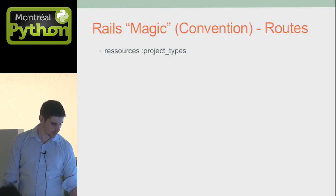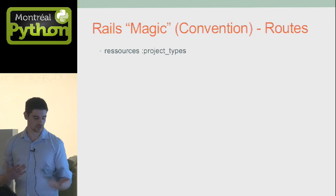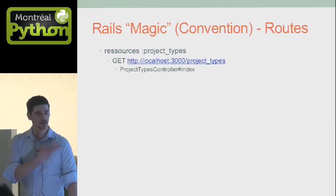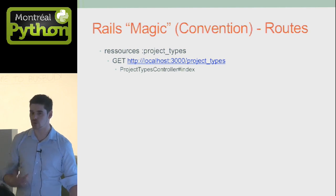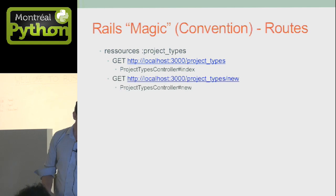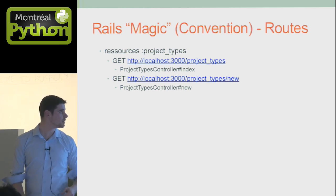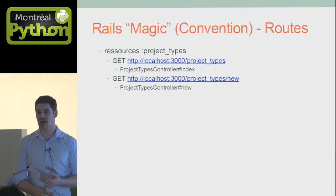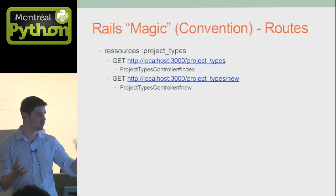Let's continue with routes. Resources colon project_types creates all the RESTful routes we need. RESTful is what Rails uses as the basic approach most of the time. The default URL for Rails is localhost:3000. A GET on /project_types gives you the index — the list of all project types. A GET on /project_types/new is the view to create a new one, which invokes the new method in project_types_controller, and loads the view at app/views/project_types/new.html.erb. Everything is set up from the start so you don't need to do a lot of manual routing.